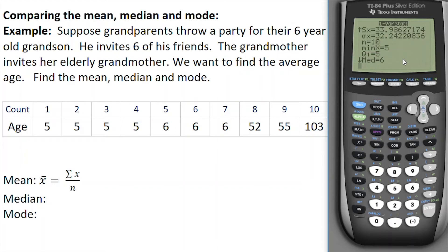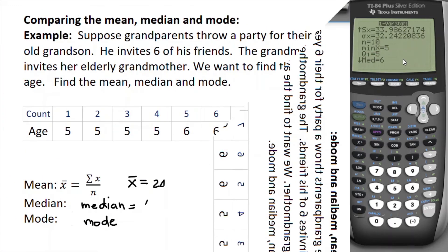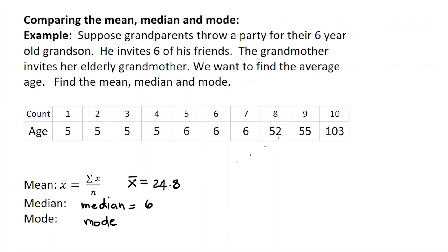Now I'll need to scan the data to find the mode. As I look at the data, I see that there are four values of five years of age and three values of six years of age, so the mode must be 5.